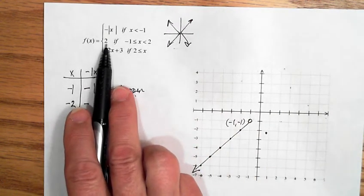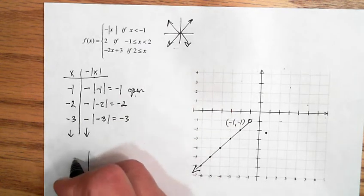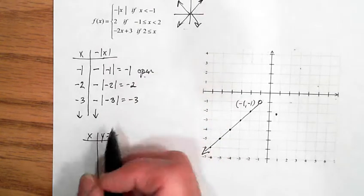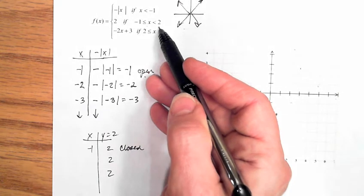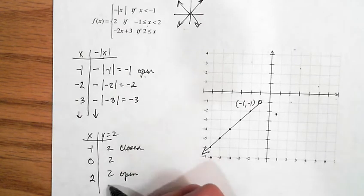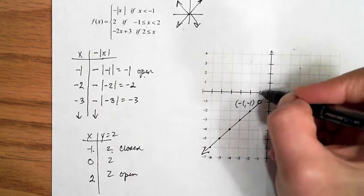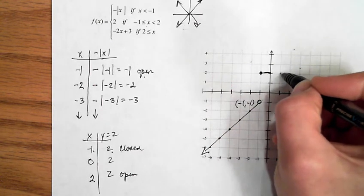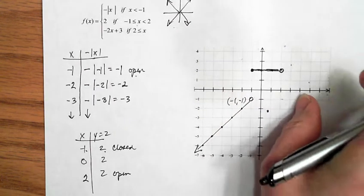The second section is just the horizontal line y = 2, going between x = -1 and x = 2. The starting value at x = -1 gives (-1, 2) as a closed endpoint because of the equal sign. Through (0, 2) to (2, 2), which is an open endpoint. Everything on this segment has y-value equal to 2, forming a horizontal line.